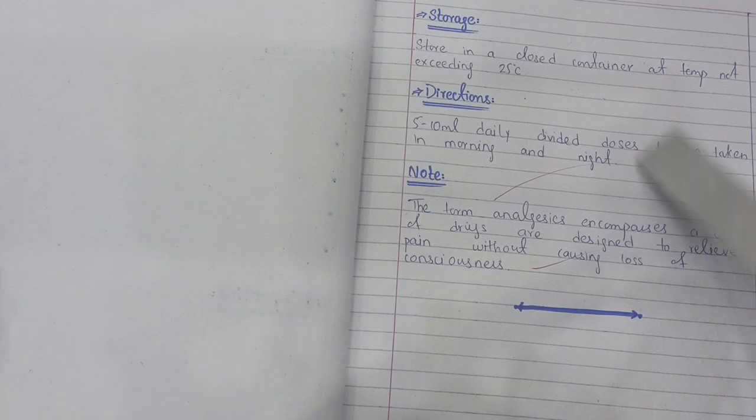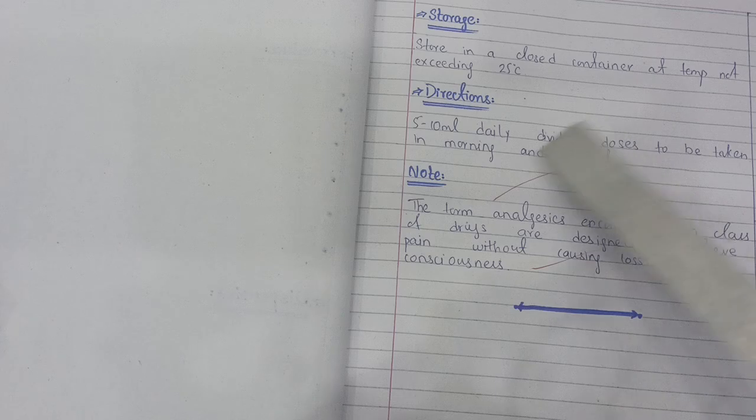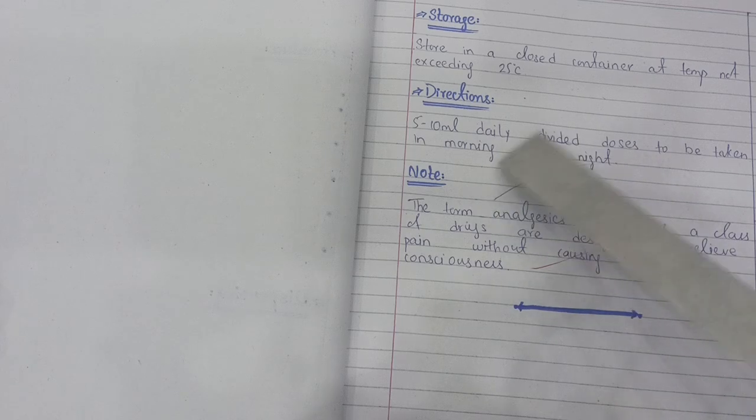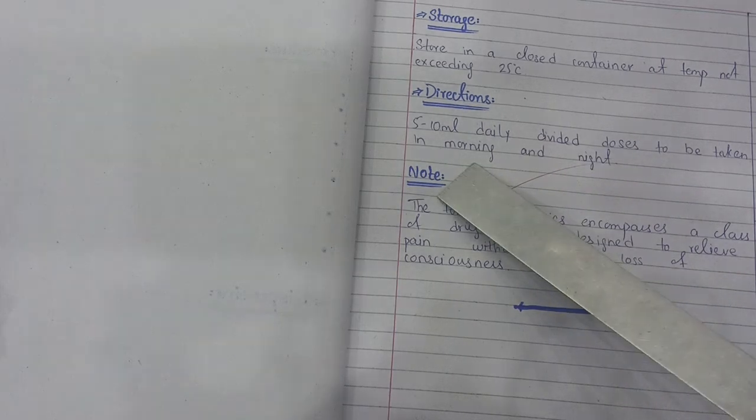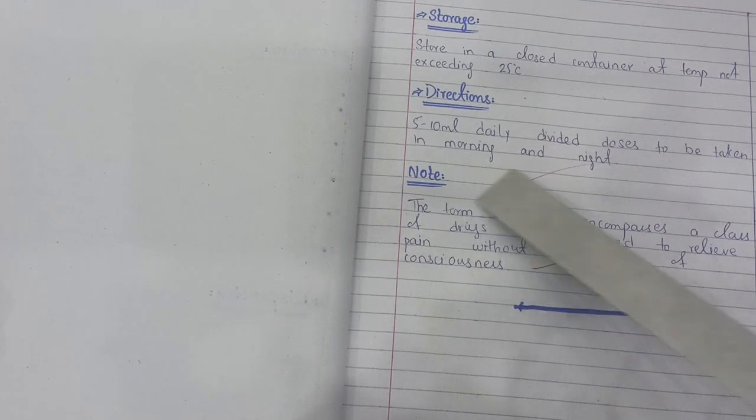For storage conditions: store it in a cool place in a closed container at a temperature not exceeding 25°C. For directions, the daily dose is 5–10 ml in divided doses.